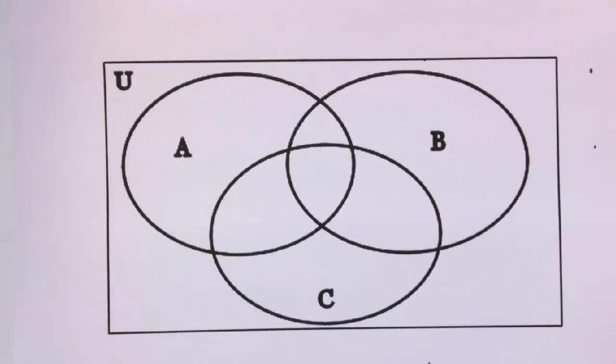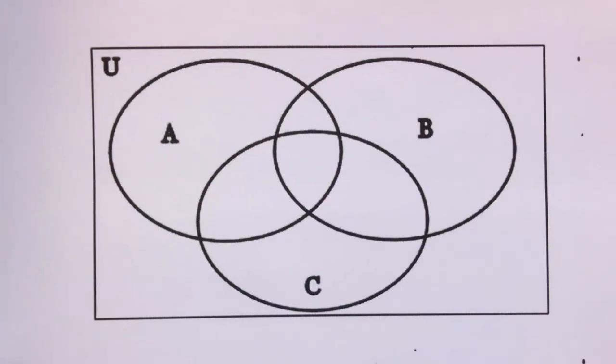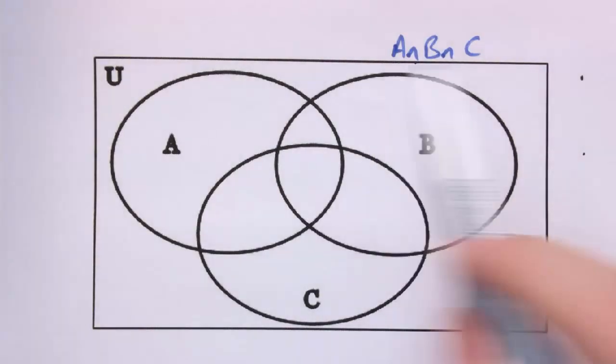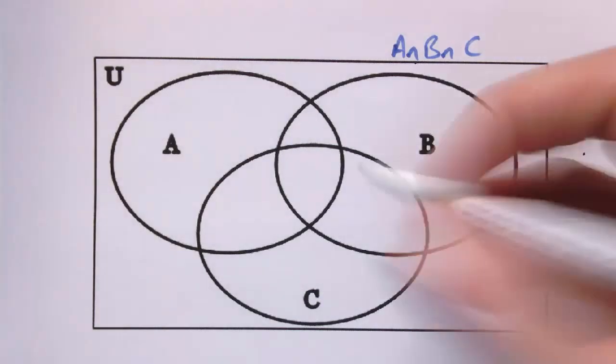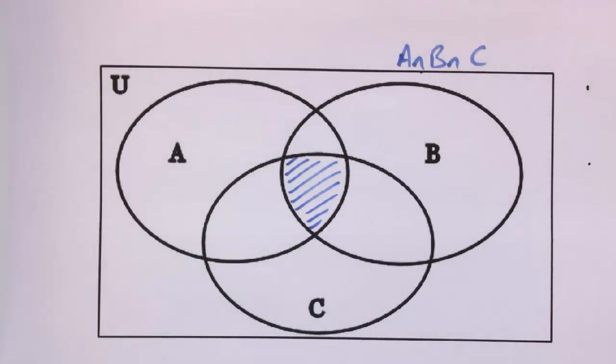Now we don't have to restrict ourselves just to two sets. I could have three or more even. I've got here A, B and C. So here, what about this? What would this mean? A and B and C. This would mean it would have to be in all of A, B and C. So it's got to be in all three sets. So it would just be this central region here.